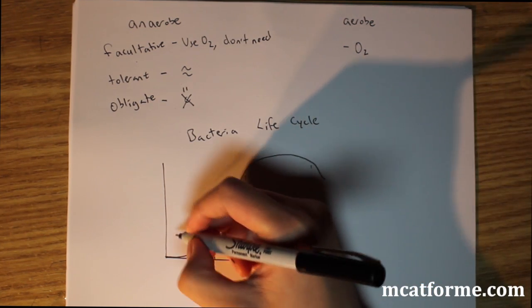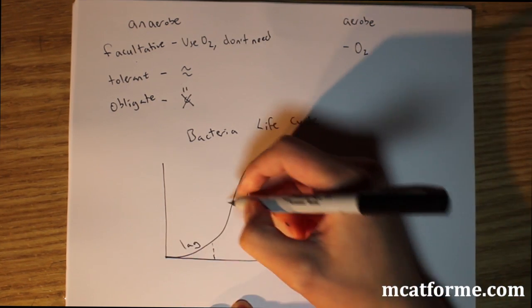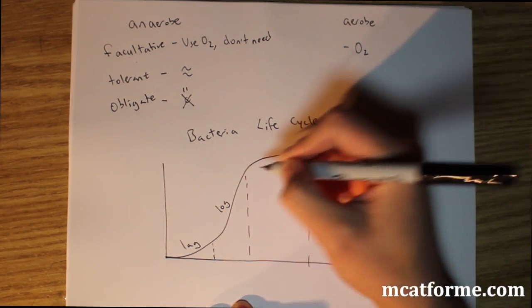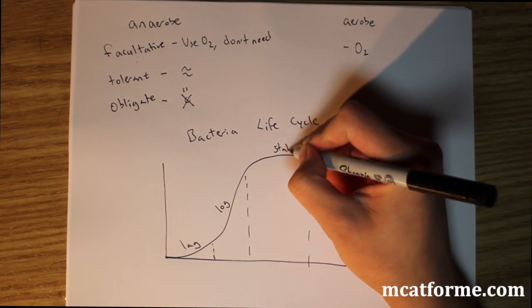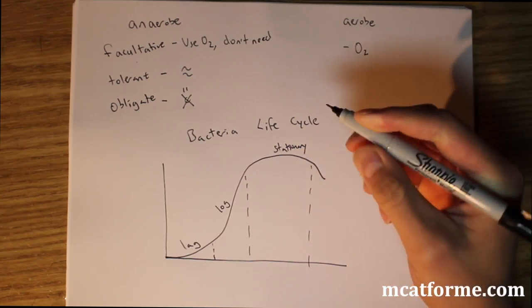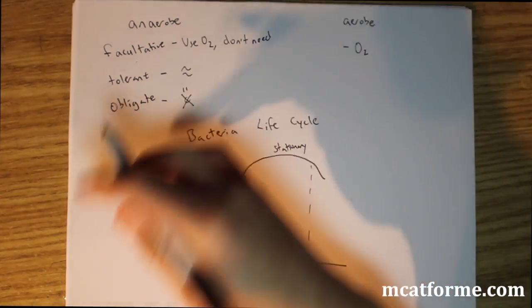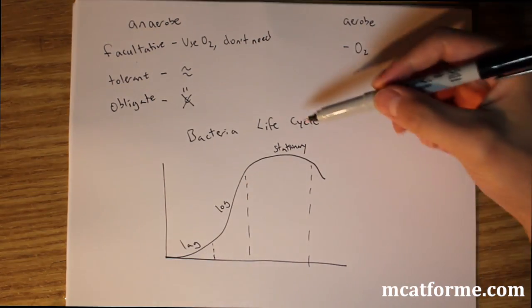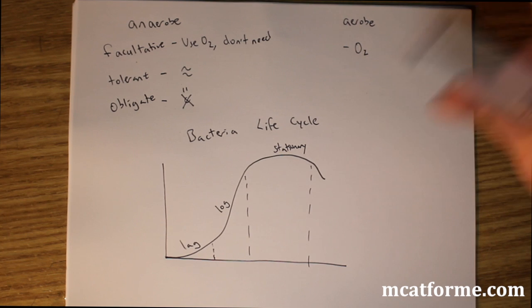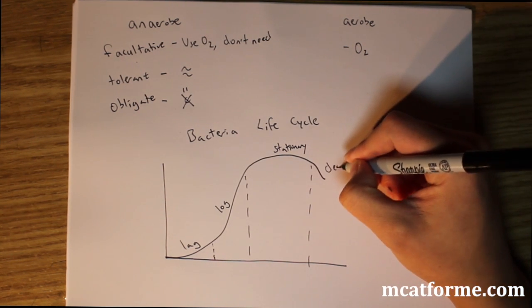So this first one right here is something called the lag phase. Then we have the log phase, which is this huge exponential growth. Then we have the stationary phase, which is when, and this is the growth and this is over time. And so the stationary phase is just, you're growing, you're not really increasing in amount, but you're not decreasing as well. And this is the death.